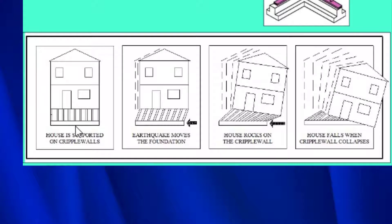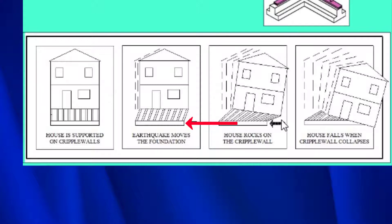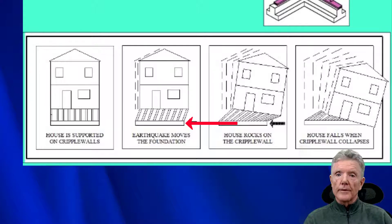This here is the foundation and then this here is the floor that you would walk around on. You can see where the ground has moved underneath the house, and when that happens inertia causes the cripple wall to lean. As the earthquake continues, the inertia causes it to lean even more and eventually you end up with complete collapse.